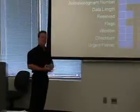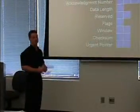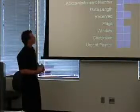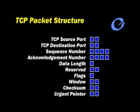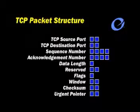The TCP packet structure is discussed on page 23 of the textbook. Notice that we see information such as the TCP source port — where the information originated — also the destination port, our sequence numbers for packet one, two, three and so on, the data length indicating how much data is being sent, the checksum value, and also the urgent pointer.